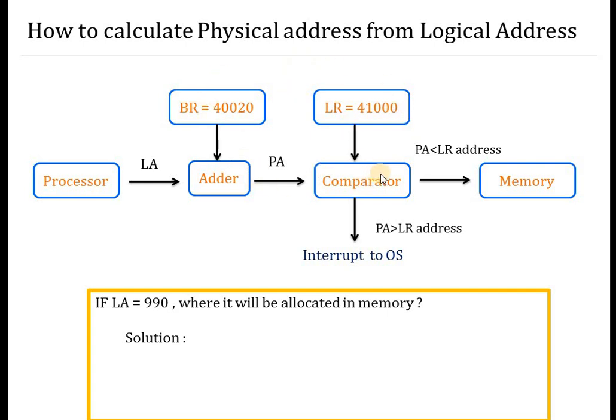So solution - first how to calculate PA? First of all you need to perform addition. You can see over here we are performing addition of LA plus BR. So what is value of LA? 990 logical address plus BR, what is value of base register? 40020. So we get value over here that is 41010.